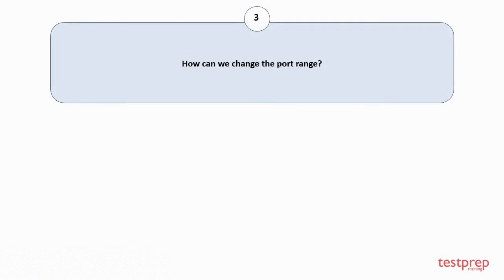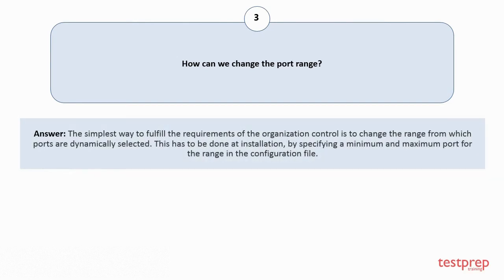Question number 3: How can we change the port range? The simplest way to fulfill the requirements of the organization control is to change the range from which ports are dynamically selected. This has to be done at installation by specifying a minimum and maximum port for the range in the configuration file.